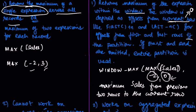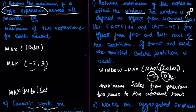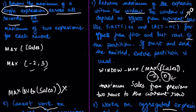Another key point: MAX is an aggregate function and cannot work on other aggregate functions — so something like MAX(AVG(Sales)) does not work. Whereas WINDOW_MAX works only on aggregate expressions, so WINDOW_MAX(Sales) alone will not work because WINDOW_MAX needs an aggregate expression. But WINDOW_MAX(AVG(Sales)) will work correctly.